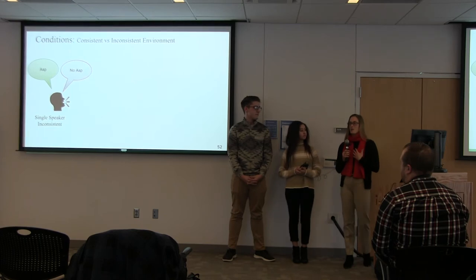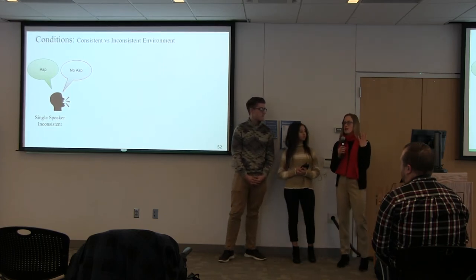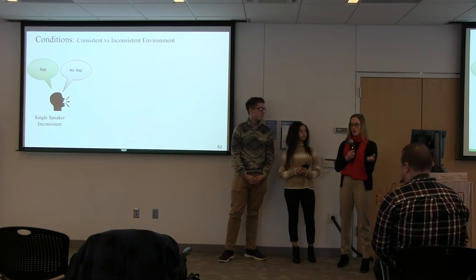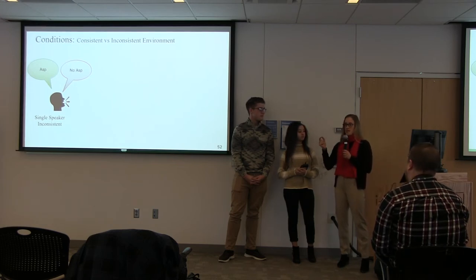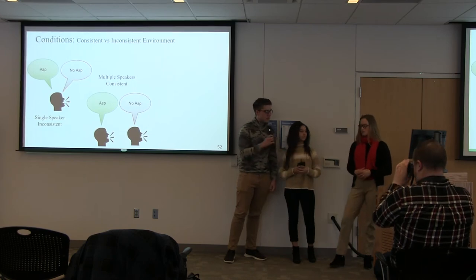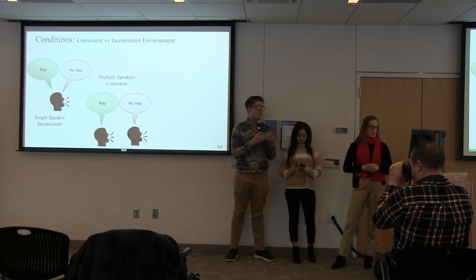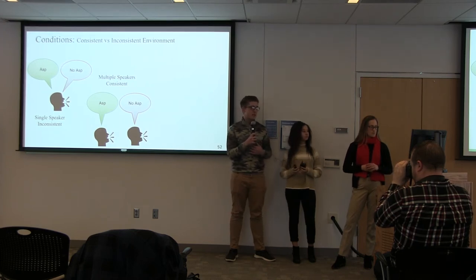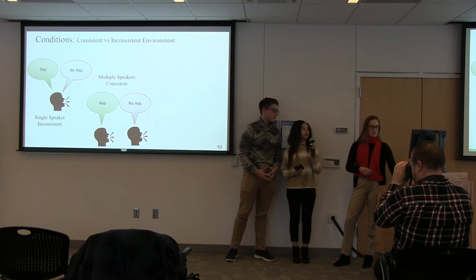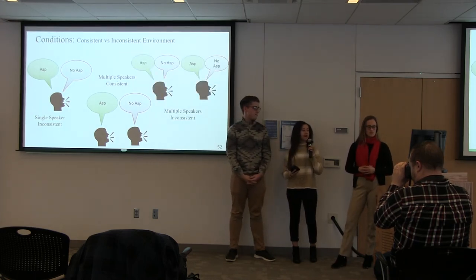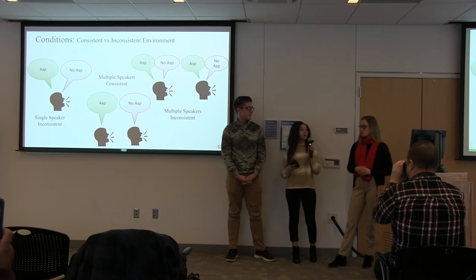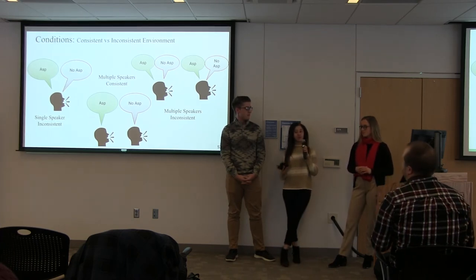For the first condition, participants were presented with a single speaker with inconsistent aspiration. This means that one speaker would aspirate or weaken the word-final S in half of the trials, and then fully realize the S in the other half — done in an unpredictable manner. For the second condition, multiple speakers consistent, one speaker would consistently aspirate and the other would consistently not aspirate, with no mixing between the two, so participants could condition their responses to each speaker over time. For the third condition, two speakers would inconsistently aspirate — for half the trials they would consistently aspirate, and the other half they would not — also done in an unpredictable manner.